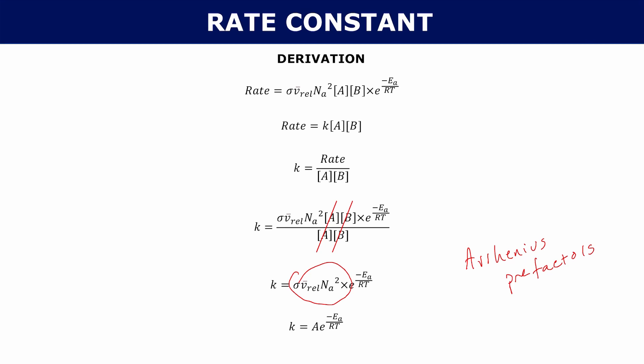Now, the first part — sigma times mean relative velocity times Avogadro's constant squared — does contain that velocity term. If you increase the temperature, molecules move faster, so the pre-exponential factor A is actually a little dependent on temperature. However, the mean relative velocity doesn't really change temperature to a great extent.